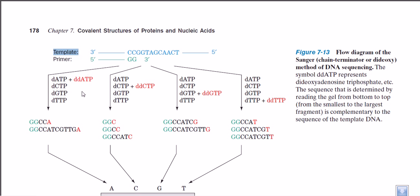So in the first test tube, we omit normal ATP and replace it with ddATP. In the second test tube, we replace normal CTP with ddCTP. In the third test tube, normal GTP is replaced with ddGTP. And in the fourth test tube, normal TTP is replaced with ddTTP. By substituting one nucleotide type per test tube with its dideoxy version, we cause chain termination at specific positions.